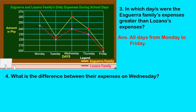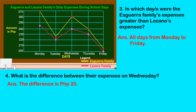Next question: What is the difference between the expenses on Wednesday? The difference is 20 pesos. For Sguera family, the expenses on Wednesday is 260 pesos, and for the Lozano family the expenses on Wednesday is 240 pesos. So we subtract 260 pesos minus 240 pesos, and the difference is 20 pesos.